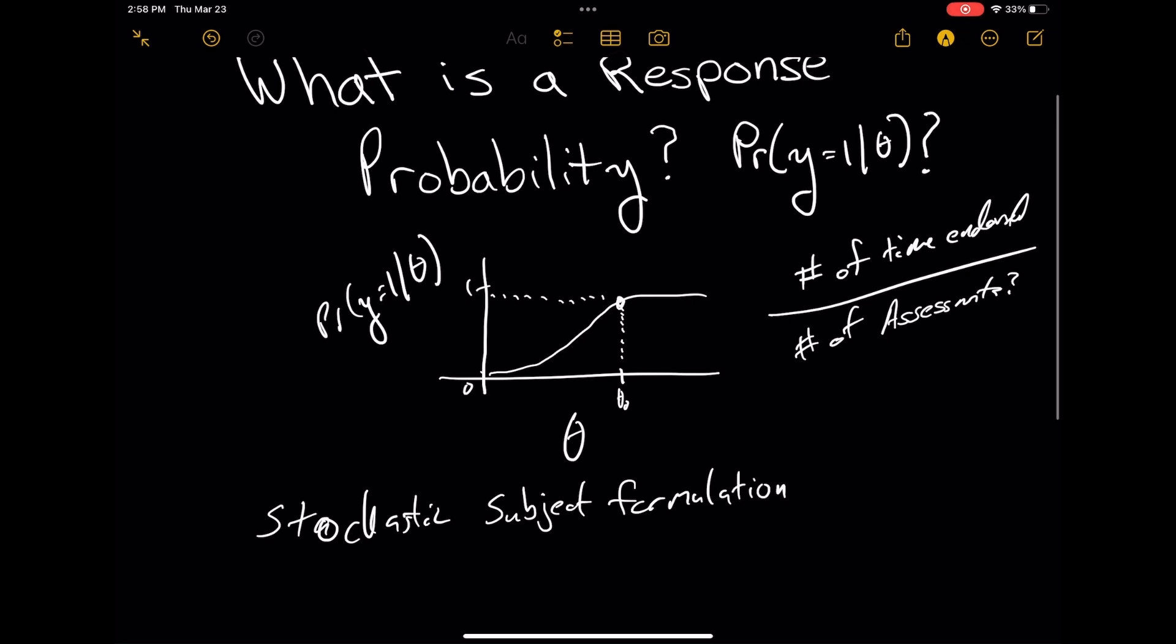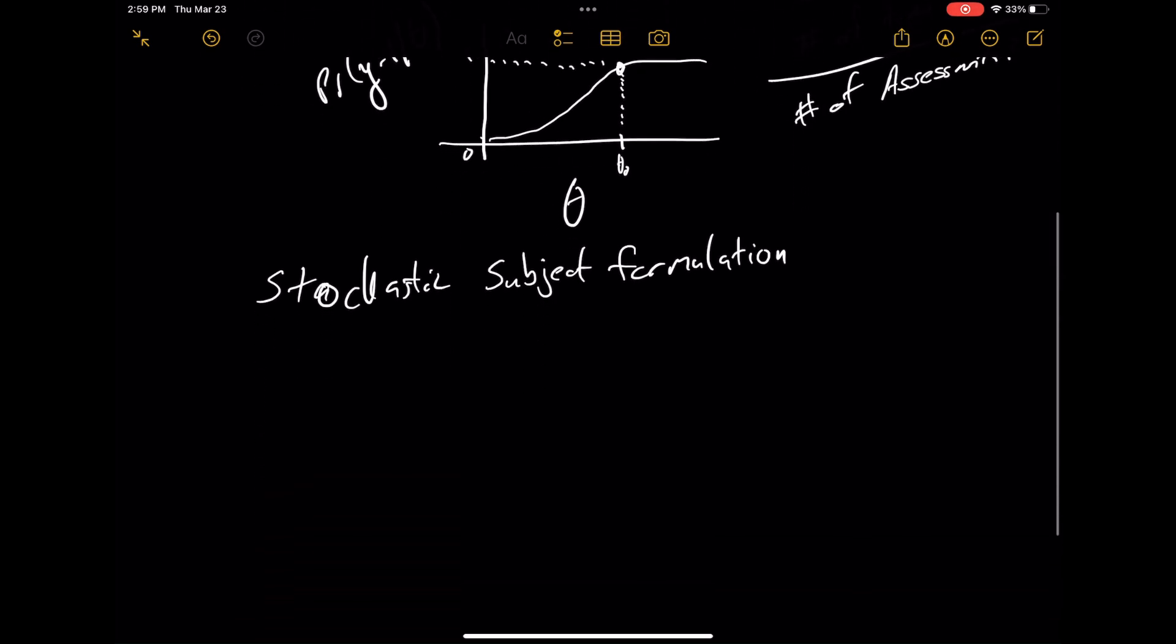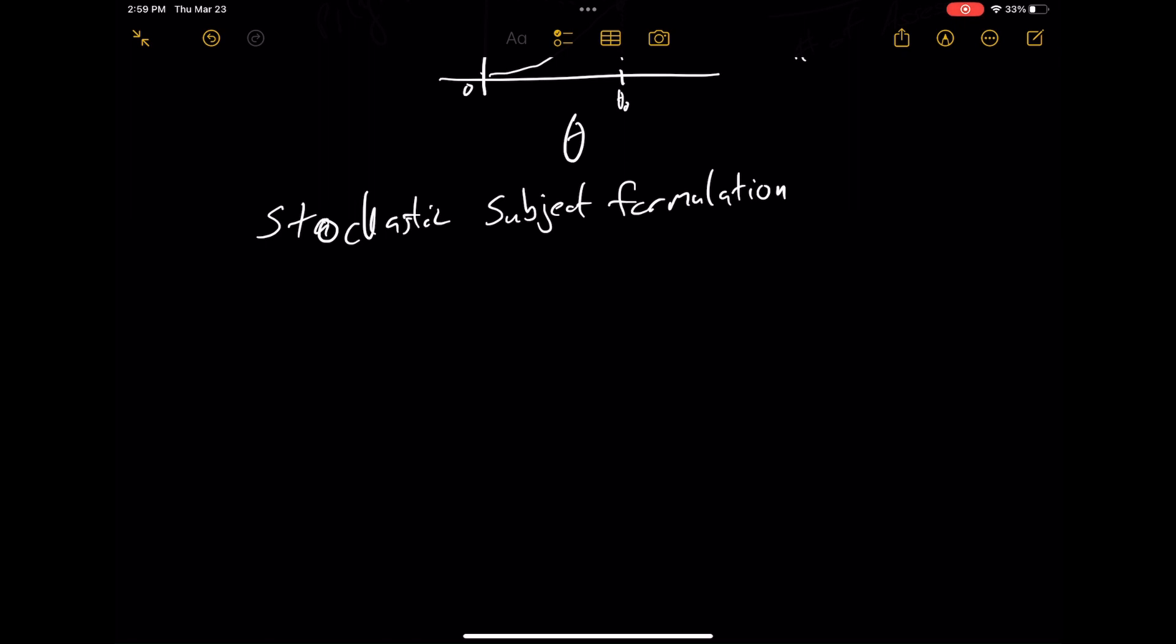That under repeated assessment, we will obtain the probability as the proportion of number of times endorsed over the number of times. But I think there's a better way, and that way is thinking about it in terms of expectation. So what is my expected value of y given theta?